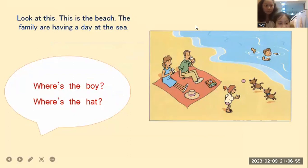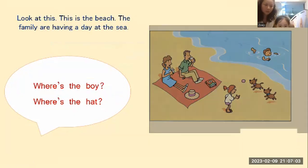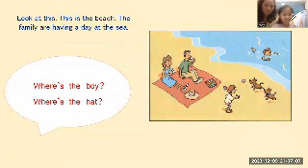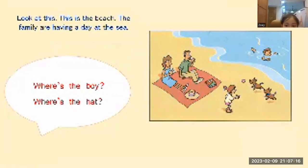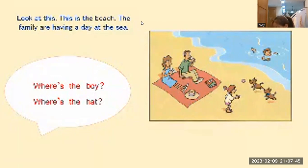Okay, so look at the picture again, Zoe. Where is the boy? The boy? Where is the boy? The boy is swimming. Swimming. Okay, very good. Number two question. Where is the hat? The hat is on the red mat. Very good. You say the hat is on the red mat.